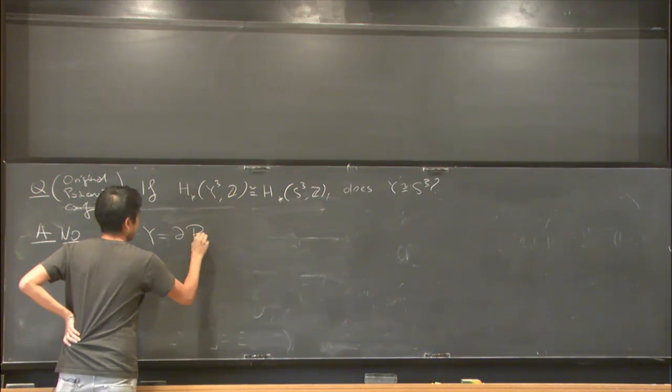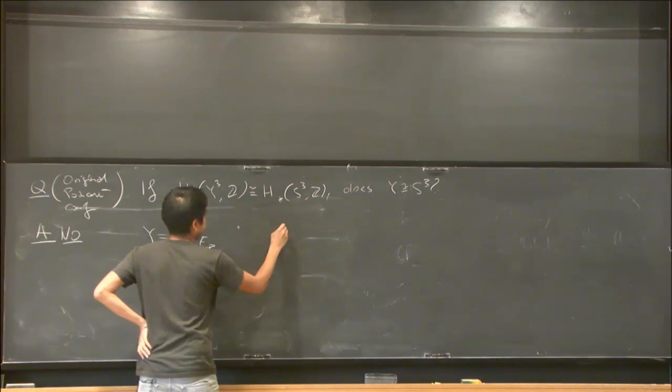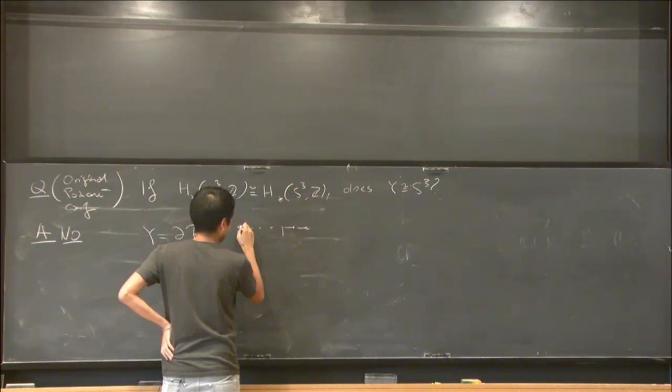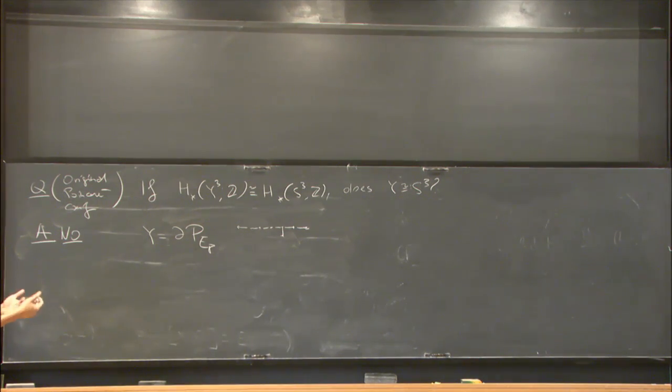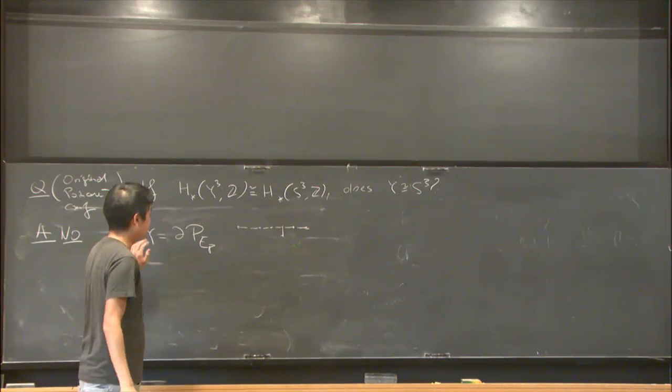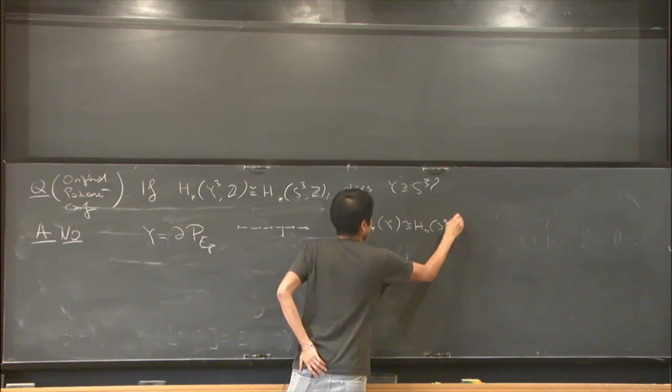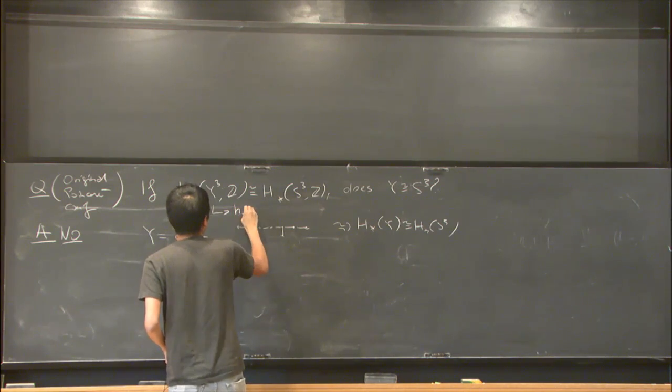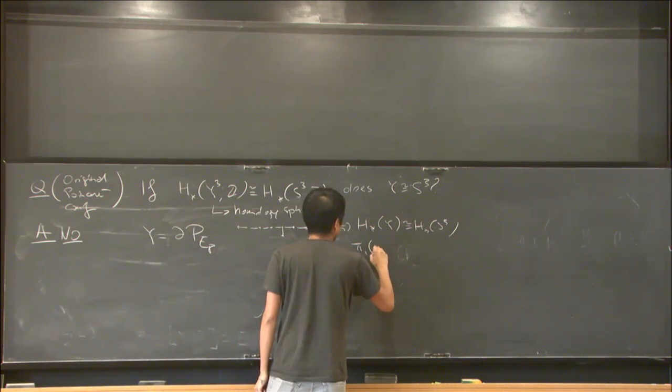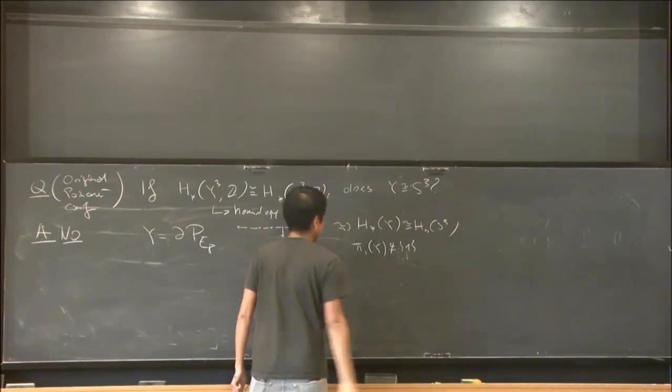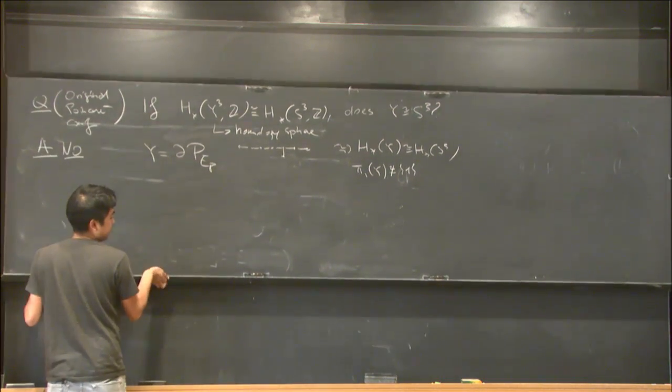The E8 root system has a graph, and you can plumb cotangent bundles over S² together for a manifold. The boundary of that - you can check that H* of Y is the same as H* of S³. This is what I call a homology sphere, but you can show that π₁ of Y is not trivial. So this is a counterexample to Poincaré's original conjecture.